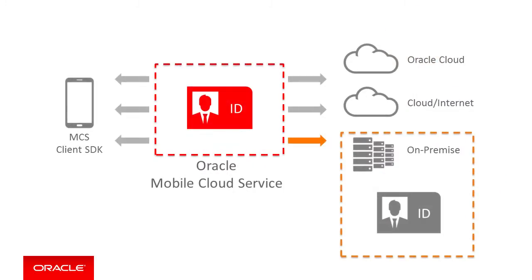On the other end, those processes usually involve on-premise applications or third-party services. This means MCS needs to authenticate against other systems on the behalf of mobile users. To do that, just configure the appropriate security policy and specify the required credentials. Simple!